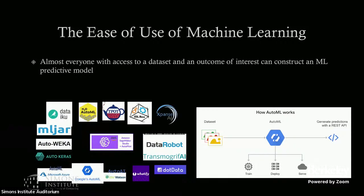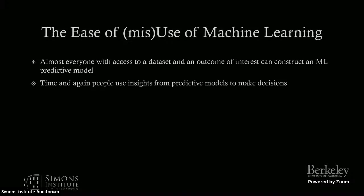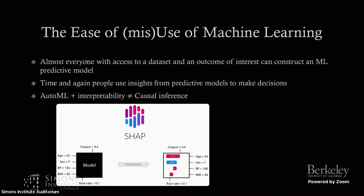One thing that is top of mind for me these days is that we live in an era where it's so easy to use machine learning. Almost every decision maker, any domain expert that has access to a dataset and an outcome of interest, can construct a machine learning predictive model to predict the outcome from the variables they have. There's all this infrastructure and software that major companies have developed where the advertisement is: come with your data, drop it into our AutoML system, and you can predict. The ease of use of machine learning has led to the ease of misuse, where especially with interpretability tools, many people currently use the combination of automated machine learning and interpretability to naively interpret that as causal inference.